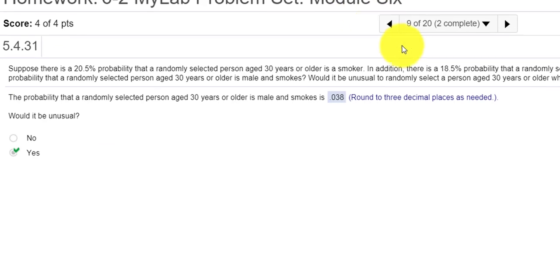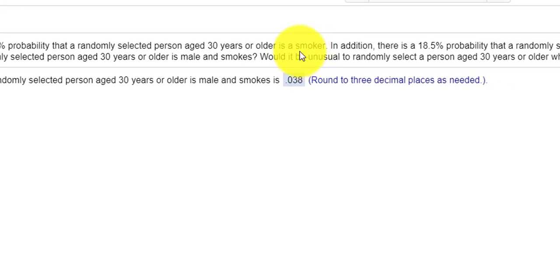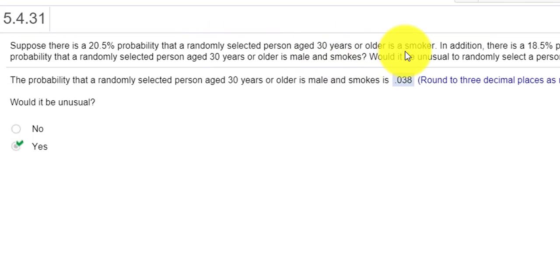Let's check out the next question, number nine. It says, suppose there's a 20.5% probability that a randomly selected person aged 30 years or older is a smoker. So the chance that someone that's 30 years or older is a smoker, the probability is 20.5%.